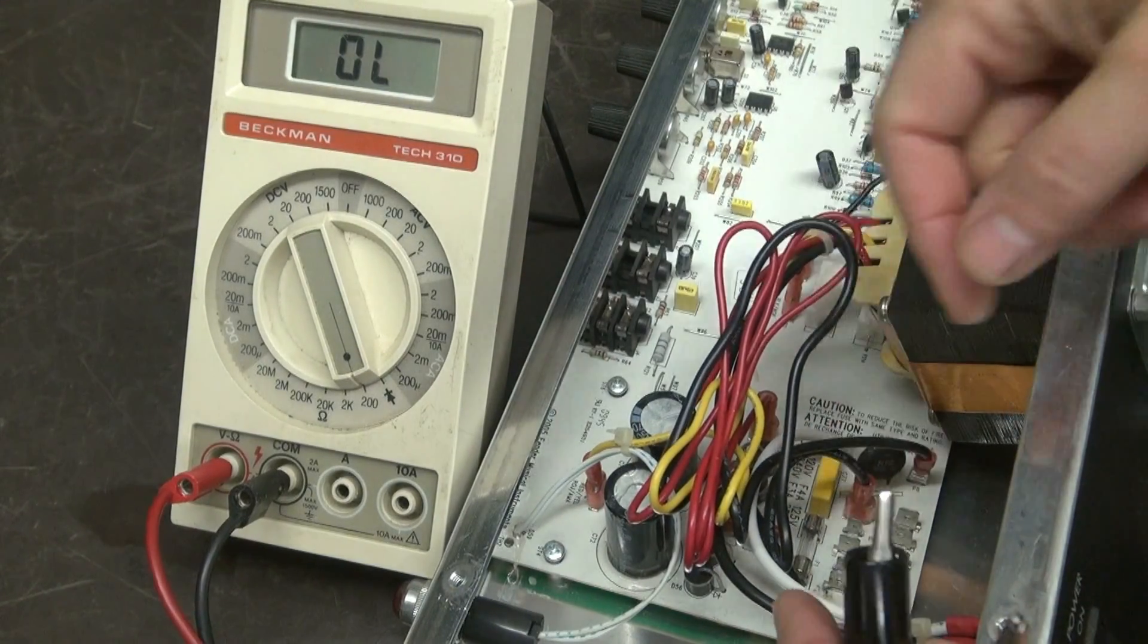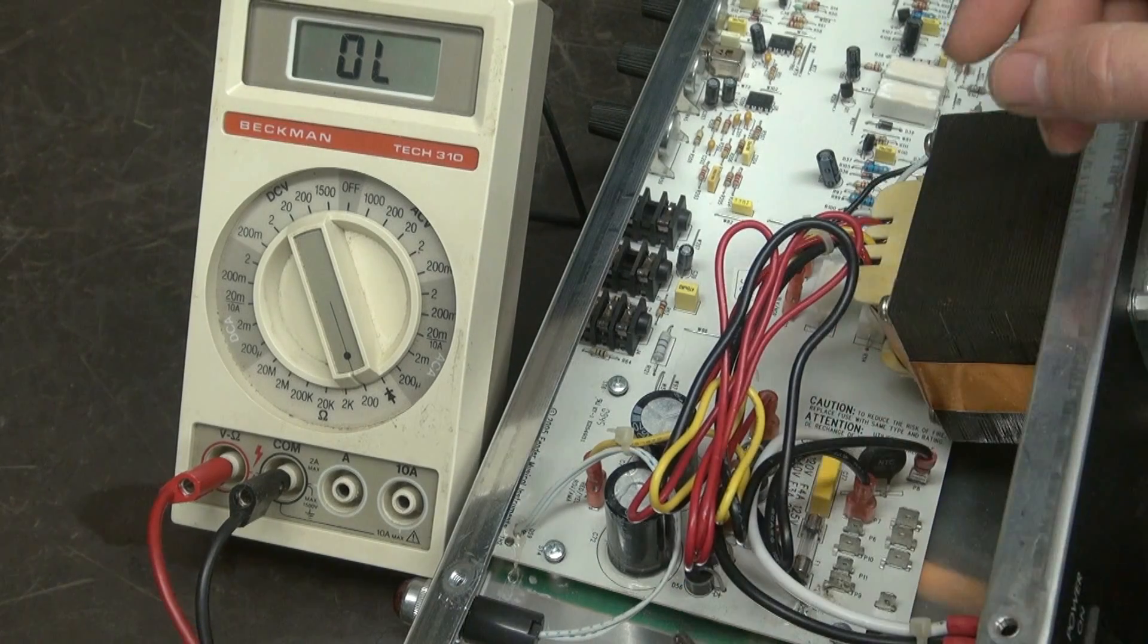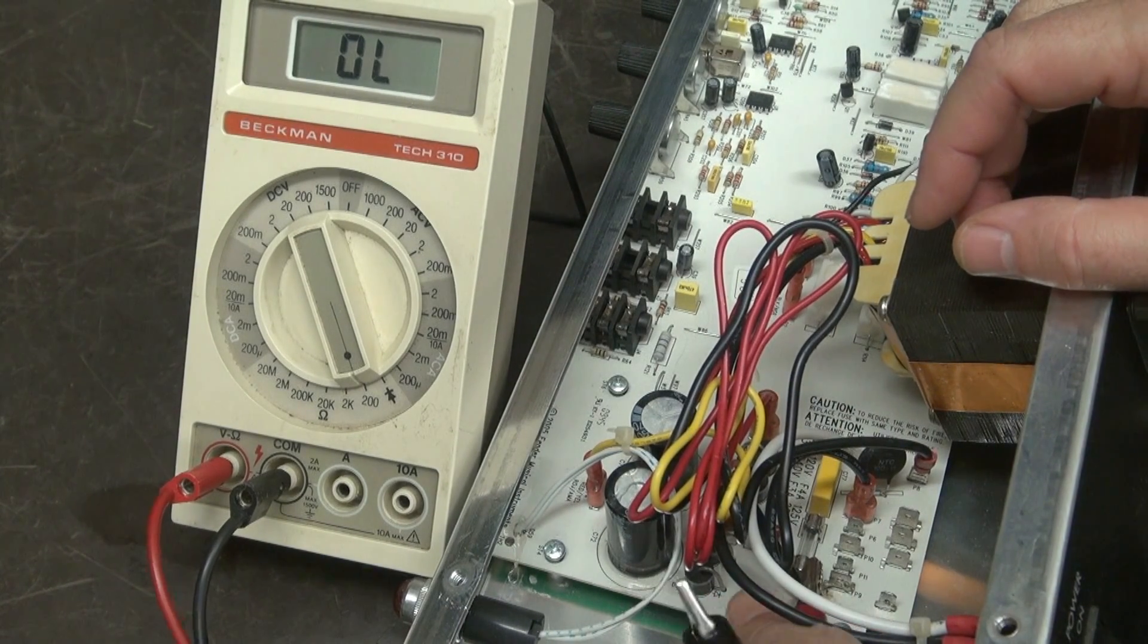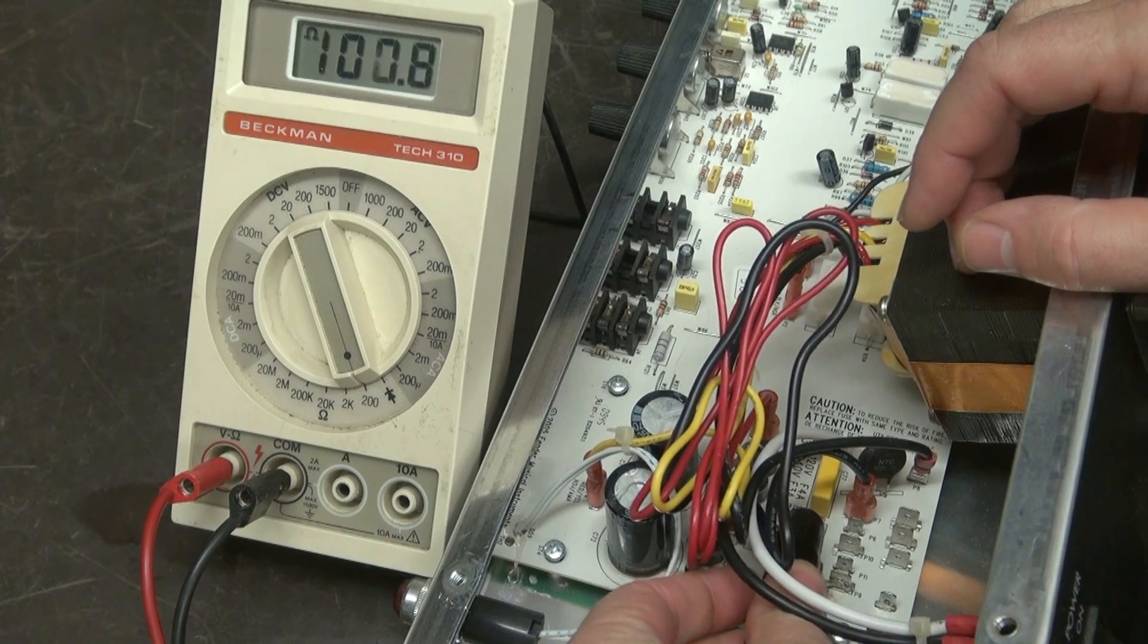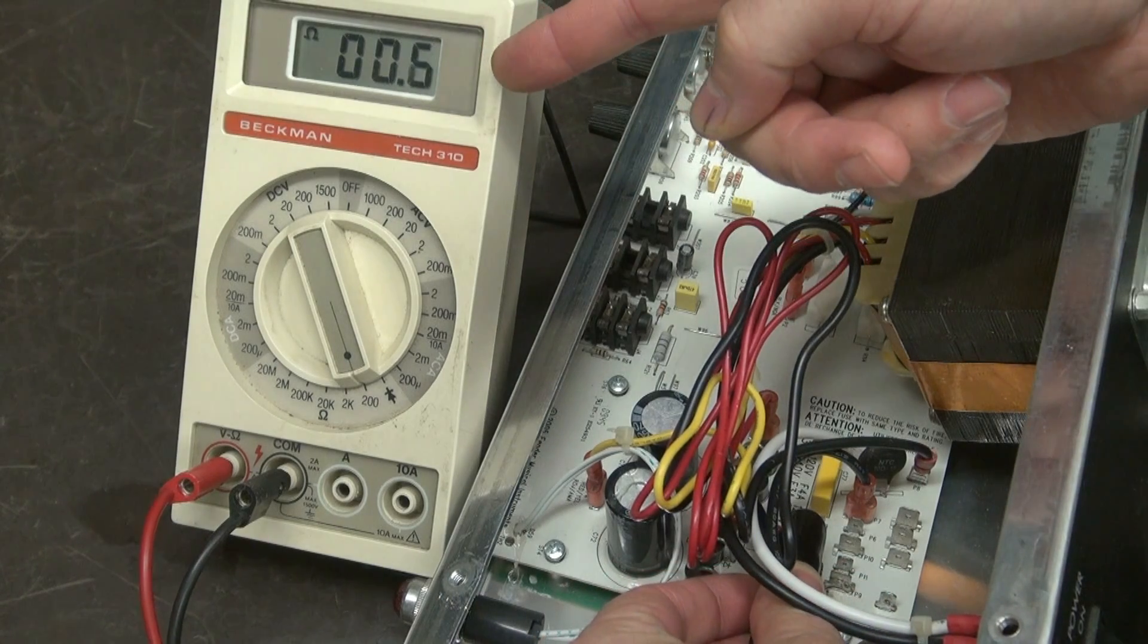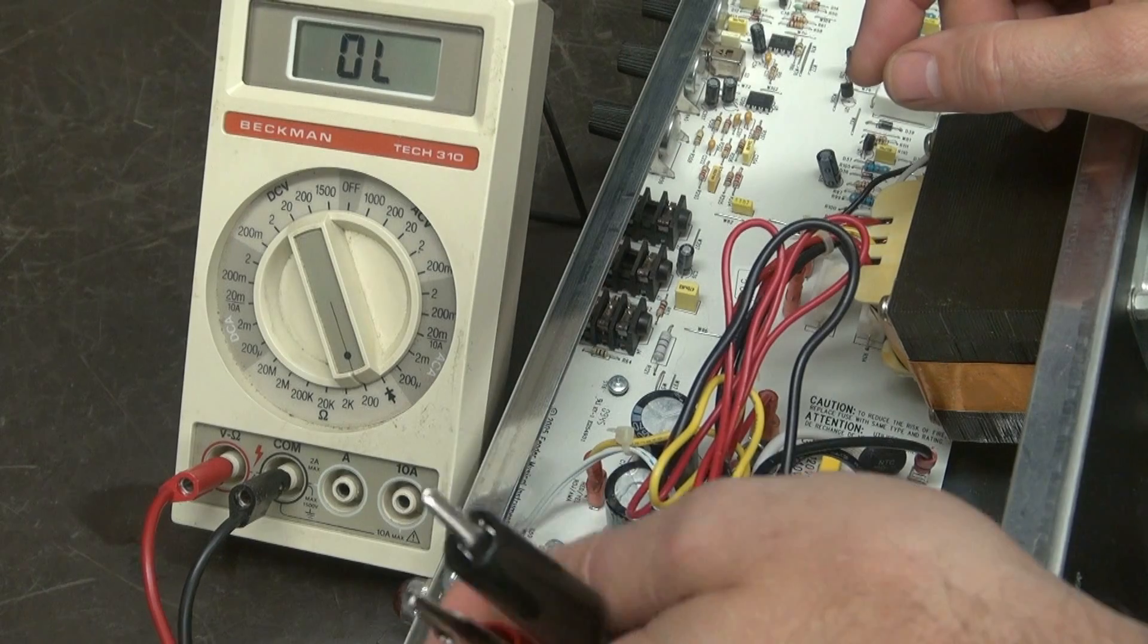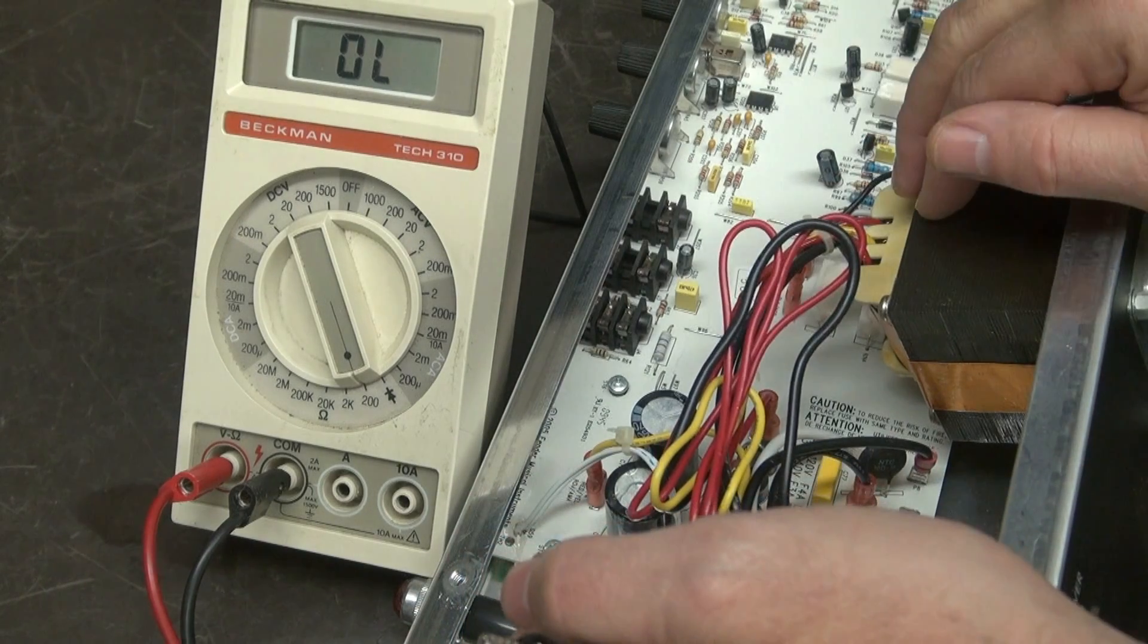So right down there is the fuse. Get our meter in there, try not to block your view. Going from there to there. Fuse is good. So we have something else causing an open circuit. Hopefully it's not the primary of the power transformer.